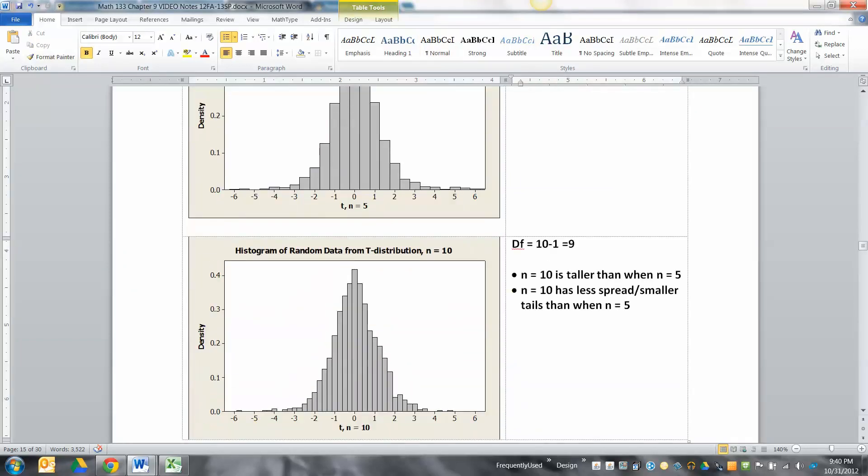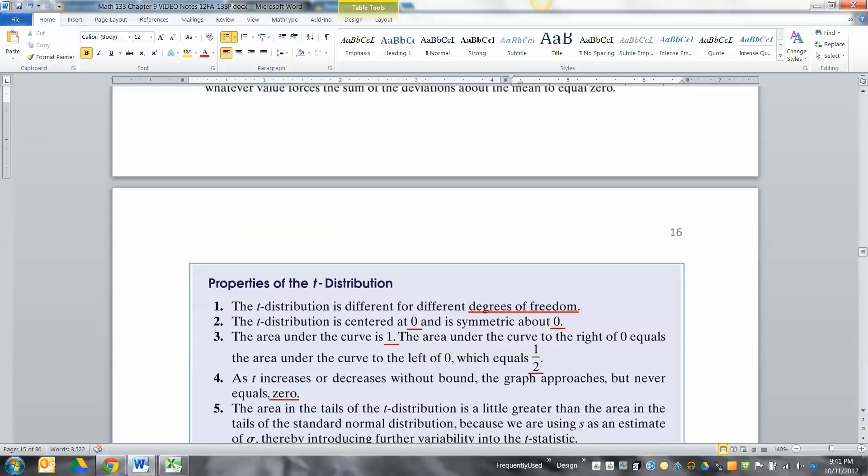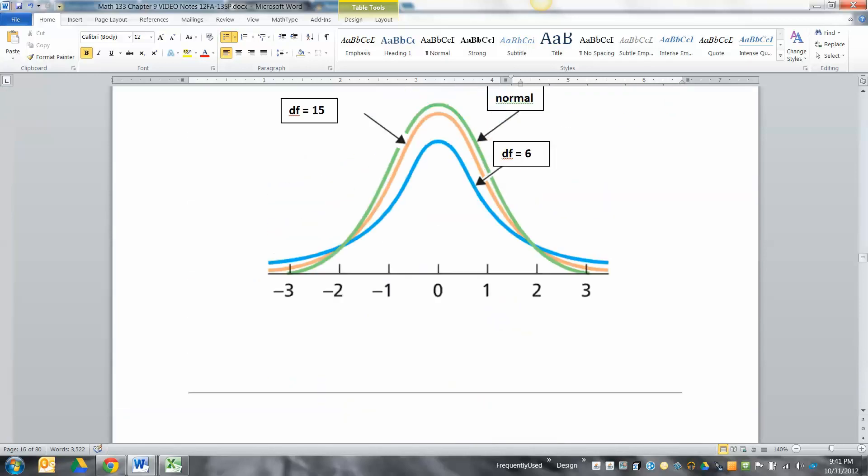If you have a larger n, it's going to be less spread out and taller peaked. The blue one is more spread out, so it has the most spread. Then degrees of freedom is 15 - it's got more spread than the normal curve but less than df equals six.